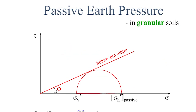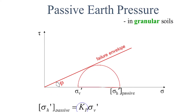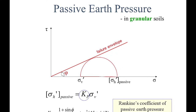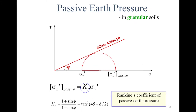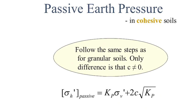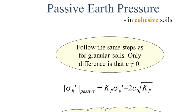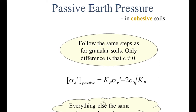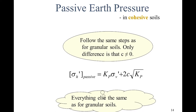The passive earth pressure coefficient Kp is given by (1 plus sin phi) divided by (1 minus sin phi), which equals tan squared (45 plus phi/2). This is Rankine's coefficient of passive earth pressure. For cohesive soils, sigma H dash equals Kp times sigma V dash plus 2c times root of Kp. If c is zero, everything reduces to the granular soils case.